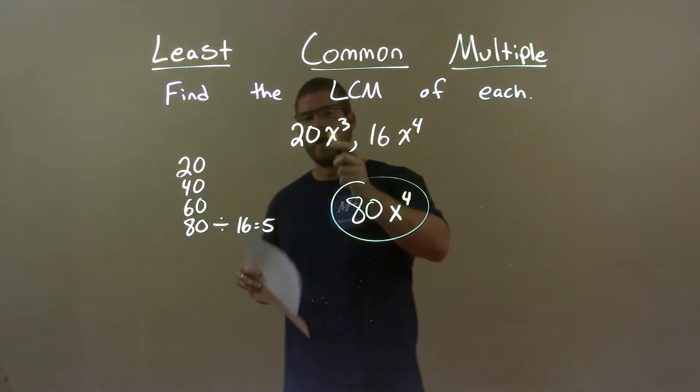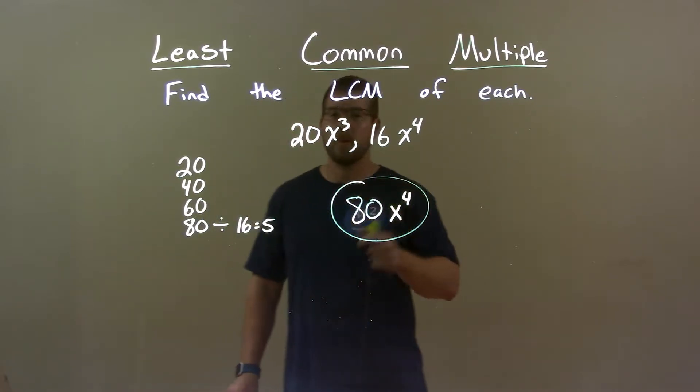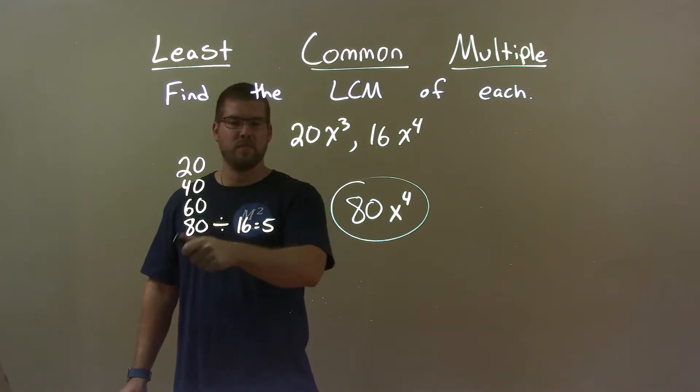Quick recap, we're given 20x to the third and 16x to the fourth and we have to find the least common multiple here. Well, we start with the numbers. Went through the multiples of 20 and found that 80 was the smallest multiple of 20 that 16 can go in evenly.